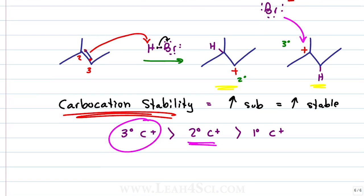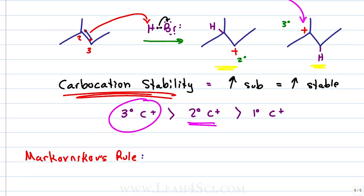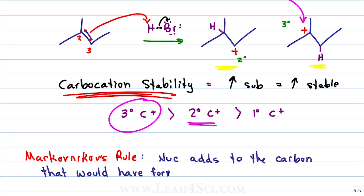So if we had to summarize Markovnikov's rule: Markovnikov's rule tells us that the nucleophile adds to the carbon that would have formed the most stable carbocation. If you need to hear this again, rewind the video, listen to the explanation, make sure it clicks, and then let's try a few problems.